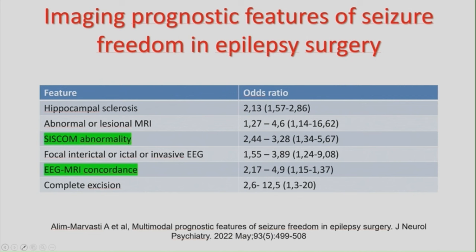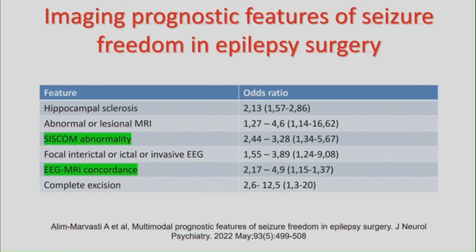Al Marvasti and colleagues from John Duncan's group evaluated all meta-analyses of epilepsy surgery with seizure freedom as the primary outcome to identify consistently prognostic features. Imaging prognostic features of seizure freedom after epilepsy surgery include: presence of hippocampal sclerosis, an abnormal lesion on MRI, focal interictal or ictal EEG, EEG-MRI concordance, and complete excision of the lesion. Only two multimodal features were present: CISCOM and EEG-MRI concordance. We need much more research to identify additional multimodal imaging features that predict good prognosis.